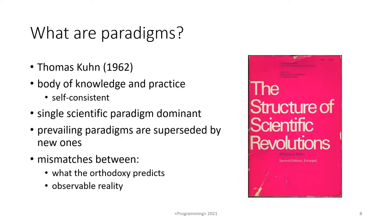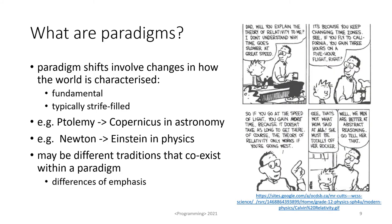So what are paradigms? They originate with Thomas Kuhn's very influential book The Structure of Scientific Revolutions from 1962. He said that a paradigm is a self-consistent body of knowledge and practice. He also said that at any given moment there is a single dominant scientific paradigm, however prevailing paradigms are superseded by new ones when you get a profound mismatch between what the orthodoxy predicts and what observable reality looks like. Paradigm shifts involve changes in how the world is characterised — they're fundamental changes and typically full of strife between proponents of the old and new paradigm.